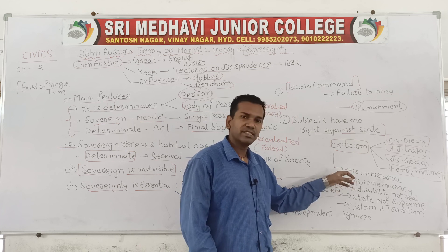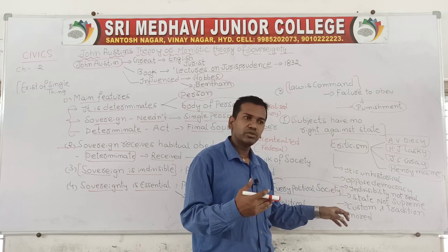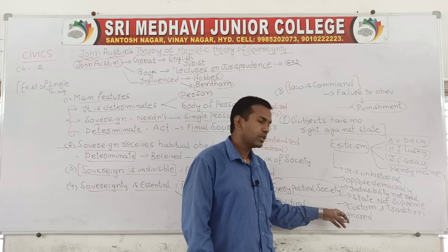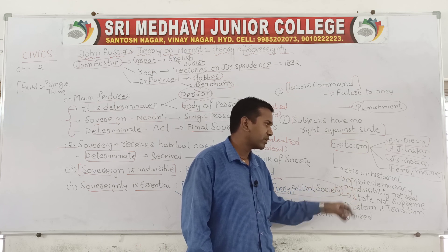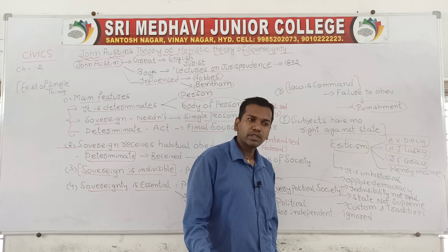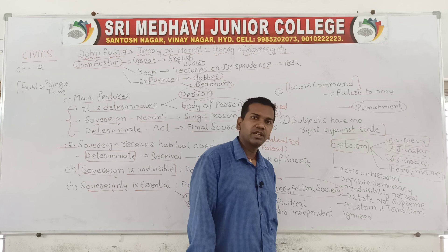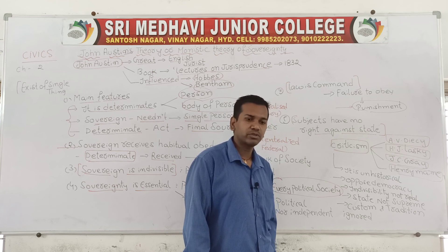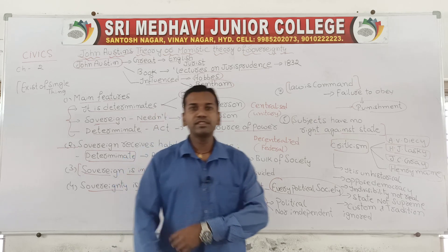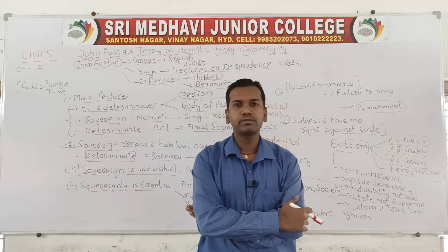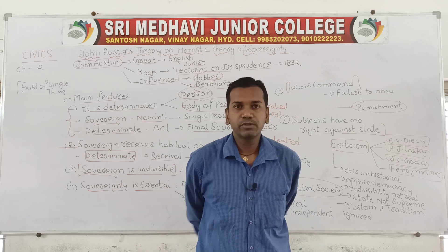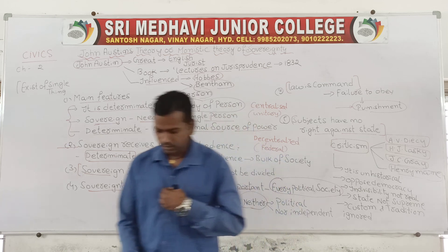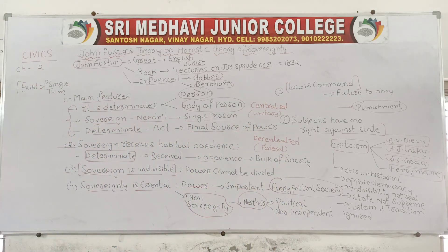To summarize the criticisms: Austin's theory is unhistorical, it opposes democracy, indivisibility of sovereignty is not real, the state cannot act as supreme when many organizations exist equivalent to the state, and customs and traditions are ignored. This is about the monistic theory of sovereignty proposed by John Austin. Thank you — we will meet in the next class.